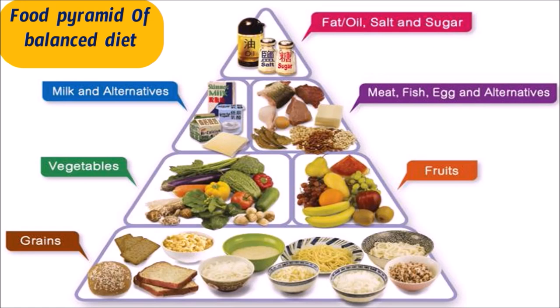The major solution for diseases caused due to malnutrition is to follow a balanced diet. This is the food pyramid showing a balanced diet. At the bottom, grains are located, which have both calories and proteins and help in proper biological activities and growth of children. Next come vegetables and fruits, followed by milk and alternatives, as well as meat, fish, and eggs.